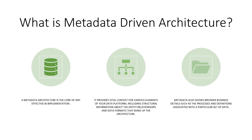For any effective BI implementation, metadata architecture is the core. It provides a vital context of various elements. Metadata is nothing but data about the data — it helps you store all the information about the data: the relationships, the formats, the context of the data, and that can help you to actually change the data as needed. Metadata also gives you broader business details like the processes and definitions associated with a particular set of data. A metadata-driven architecture will help us make our whole ETL process very configurable and flexible, so if any changes come in, they can be easily incorporated.